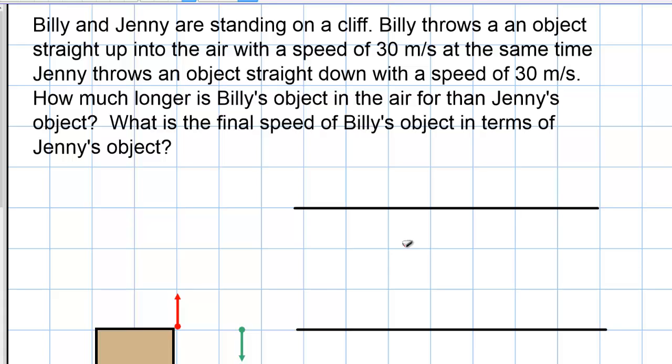Billy and Jenny are standing on a cliff. Billy throws an object straight up into the air with a speed of 30 meters per second. At the same time, Jenny throws an object straight down with a speed of 30 meters per second. How much longer is Billy's object in the air than Jenny's object? And what is the final speed of Billy's object in terms of Jenny's object?